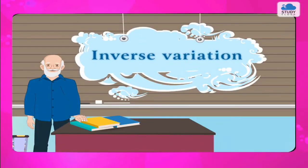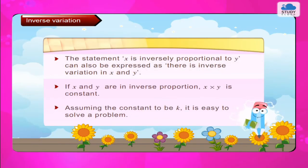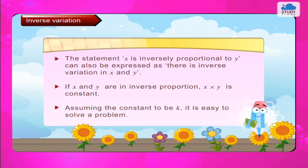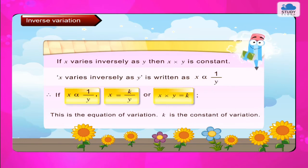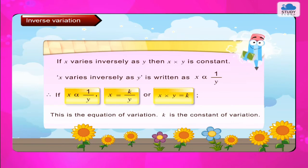Inverse Variation. The statement 'x is inversely proportional to y' can also be expressed as 'there is inverse variation in x and y.' If x and y are in inverse proportion, x × y is constant. Assuming the constant to be k, if x varies inversely as y, then x × y = k. This is written as x = k upon y, or x × y = k, which is the equation of variation where k is the constant of variation.